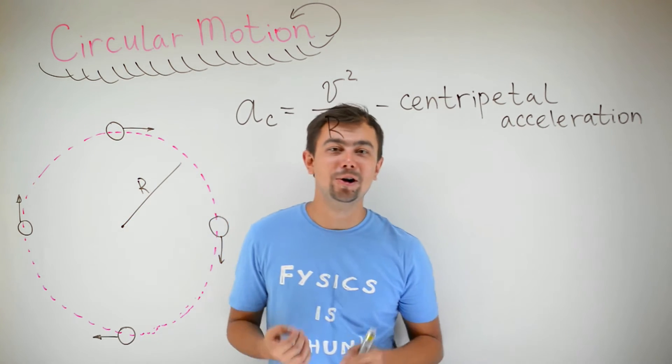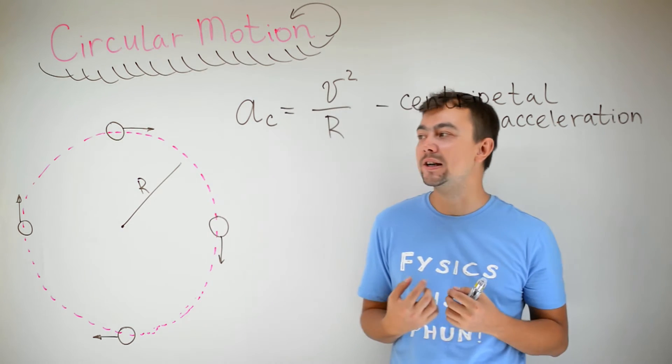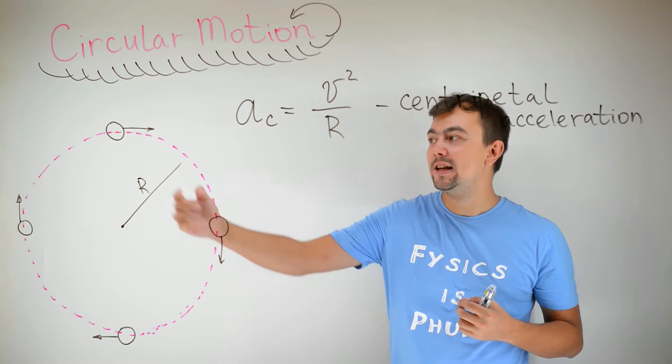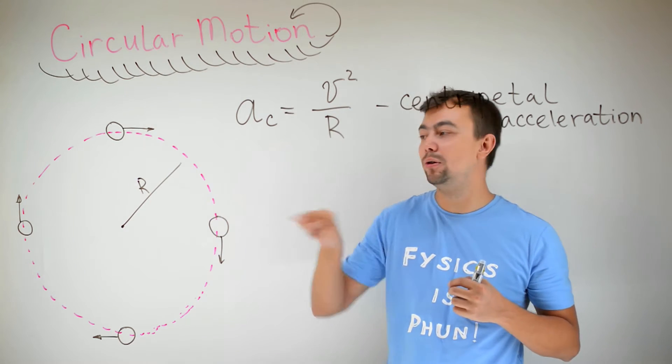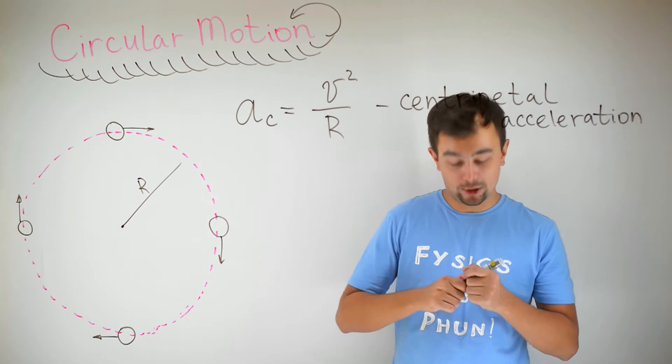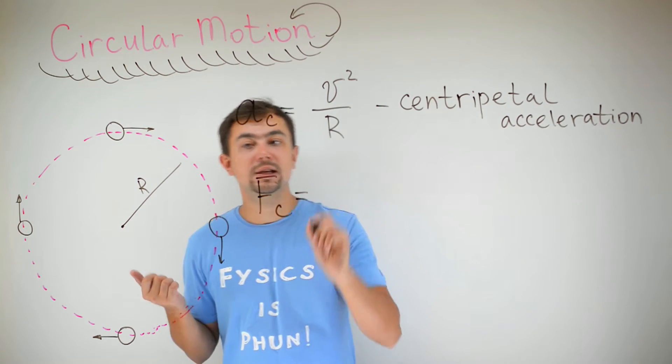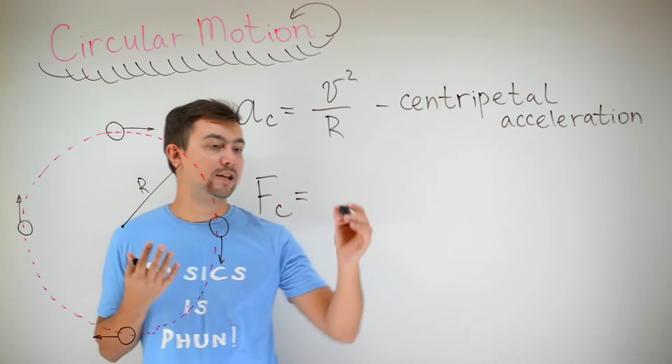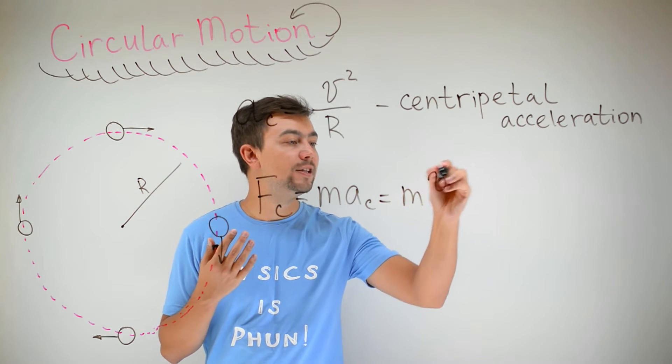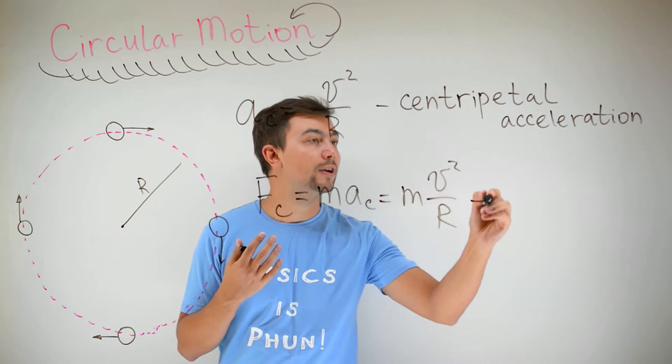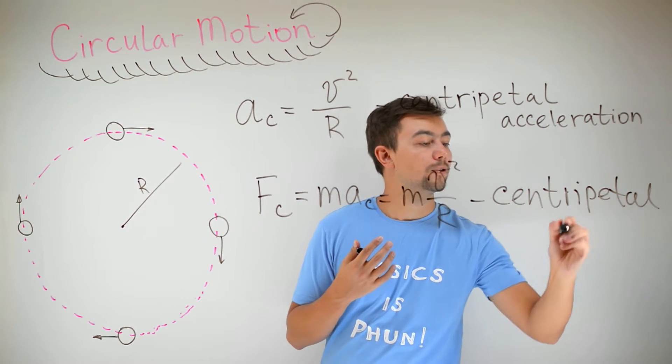From Newton's second law, we know that acceleration can only be caused by a force. Well, in this case, the ball is traveling around the earth. So gravity is pulling the ball towards the center. So the centripetal force is equal, by Newton's second law, to mass times acceleration. So it's mv squared divided by r. And this is centripetal force.